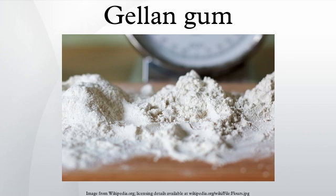Gellan gum is a water-soluble anionic polysaccharide produced by the bacterium Sphingomonas elodea. The gellan-producing bacterium was discovered and isolated by the former Kelco division of Merck and Company, incorporated in 1978 from lily plant tissue from a natural pond in Pennsylvania, USA.